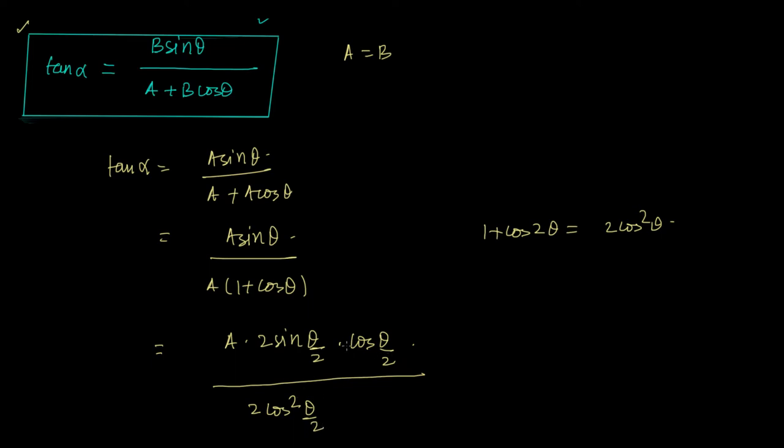Now what happens is one cos theta cancels this, this 2 cancels this and I am left with - there is an A as well - so A cancels A and I am left with tan theta upon 2.